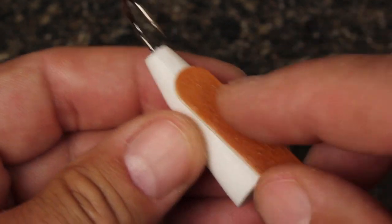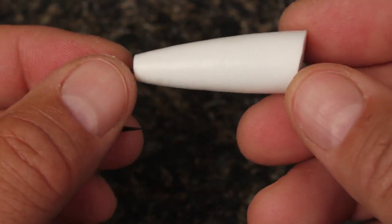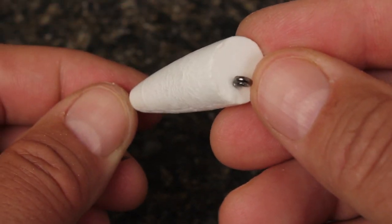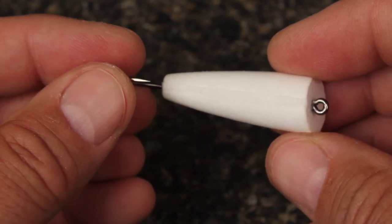Give it a light sanding with the emery board, and there you have it. A foam popper with the hook held firmly in place and the channel filled, all ready for paint, tailing material, eyes, and a finish coat.